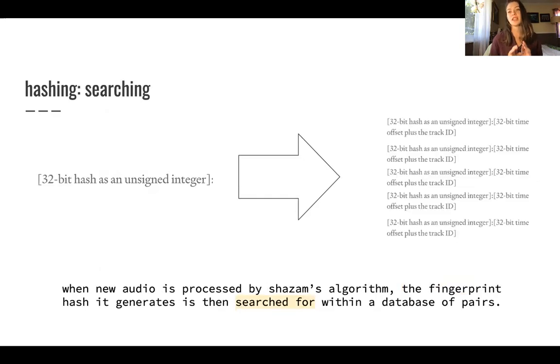So basically when you search for it, it takes this left side, the 32-bit hash as an unsigned integer, and searches for it in a database that has these pairs. It's basically the hash that you're looking for and then it has the time offset plus the track ID. So when it searches for the track, what's really unique is that it has a runtime of O(1) because they're stored in a hash table. This implementation of audio recognition made a really complex task really simple and really fast, and that's kind of the magic of Shazam.